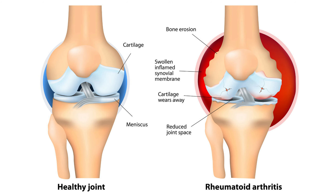Rheumatoid arthritis, on the other hand, is slightly less common. It often starts to develop once a person is aged between 40 and 50 years old, and women are three times more likely than men to be affected. Rheumatoid arthritis is in fact an autoimmune disease in which the immune system attacks the lining of the joints, causing them to become swollen and painful. It usually affects the joints in the hands, feet, and wrists.